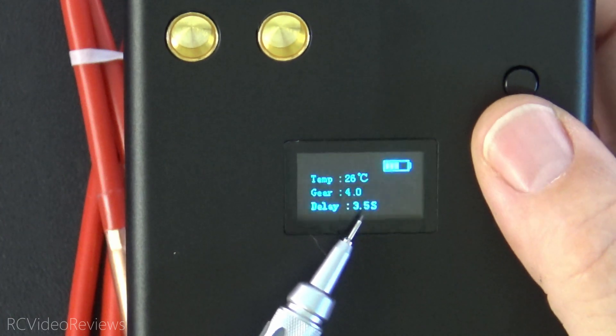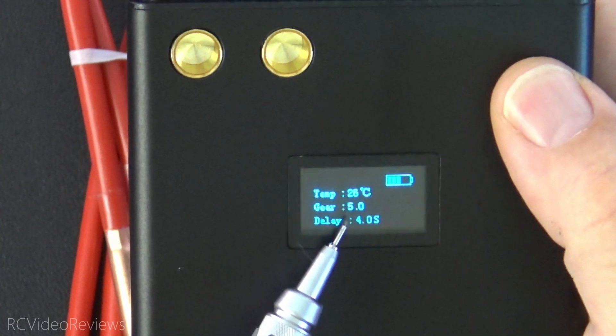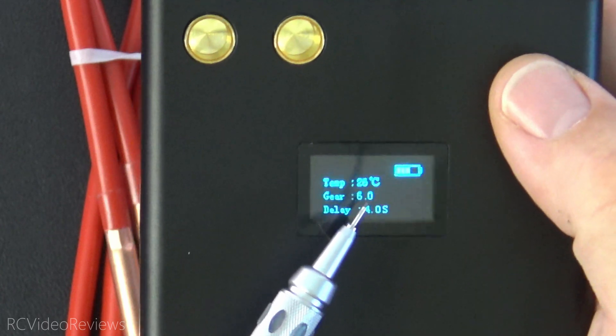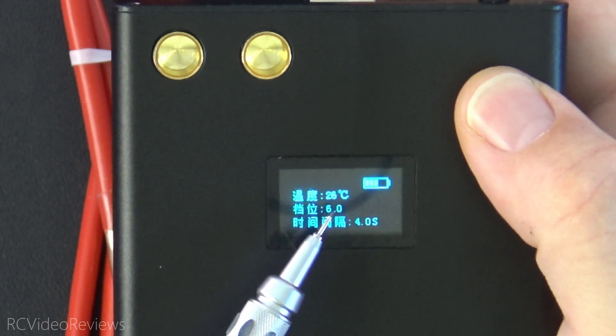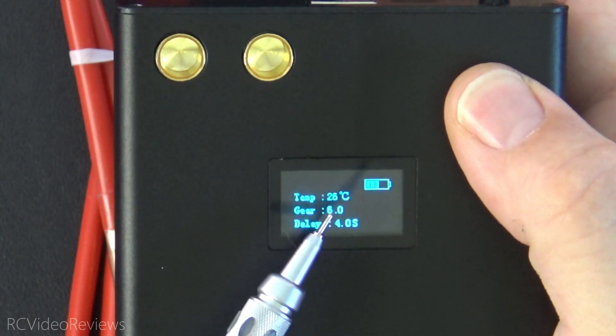You can change the delay by pressing the bottom button and you can change the power output by pressing the top button. By long pressing the top button you can change the language from English to Chinese and then long press it and you can change it back to English.